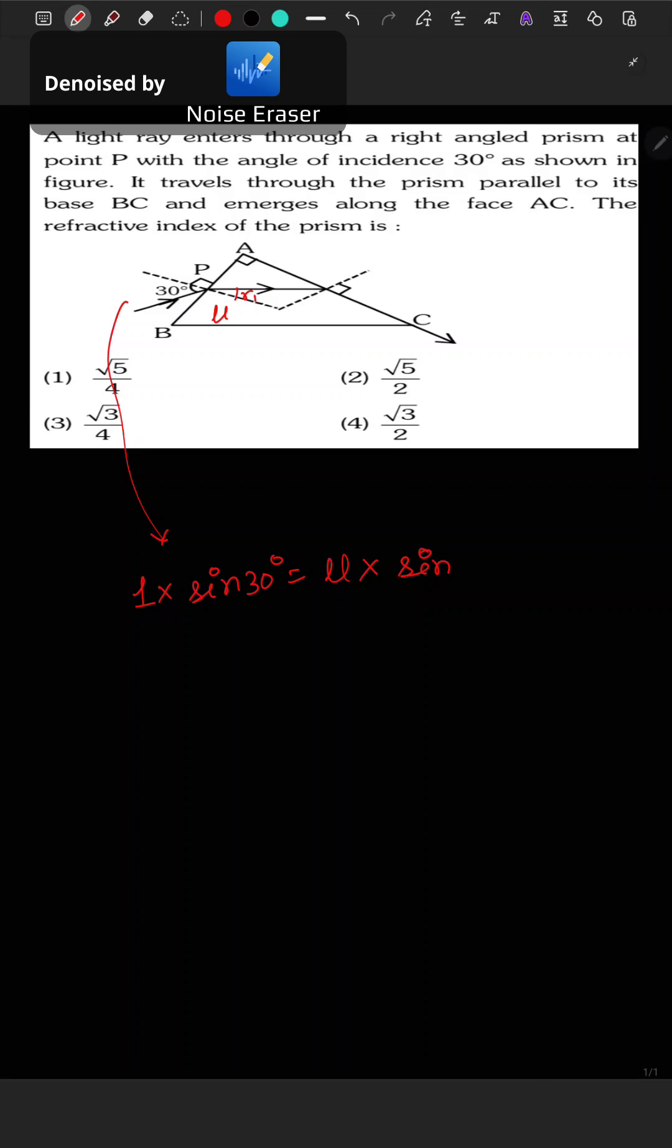Now this angle will be r2. Here, r1 plus r2 equals the angle of prism, which is 90 degrees. So r2 can be written as 90 minus r1. Now for the second surface,